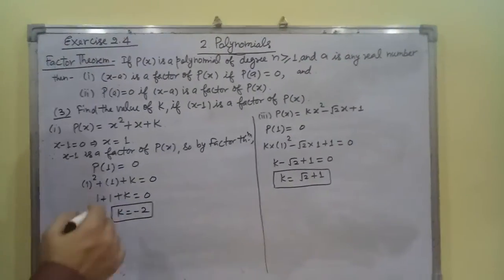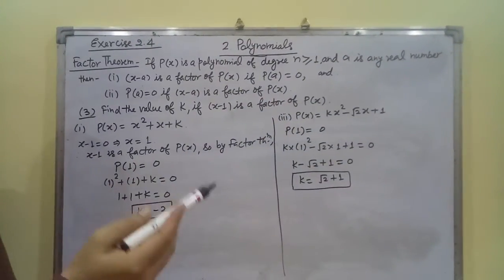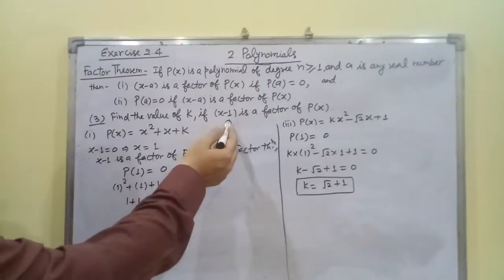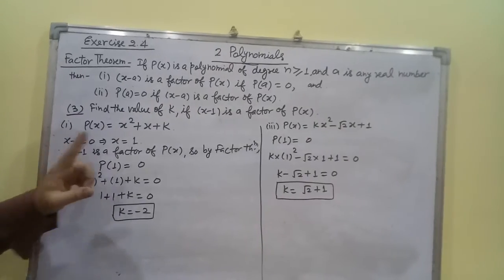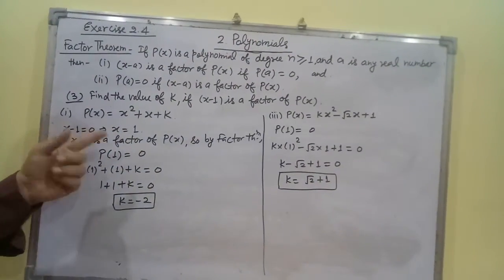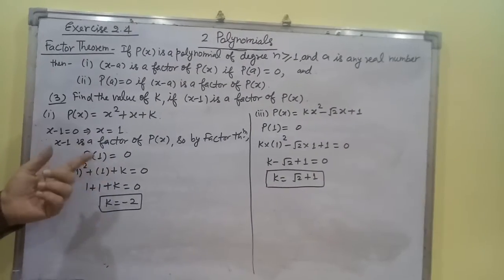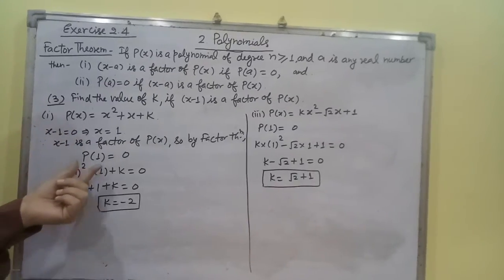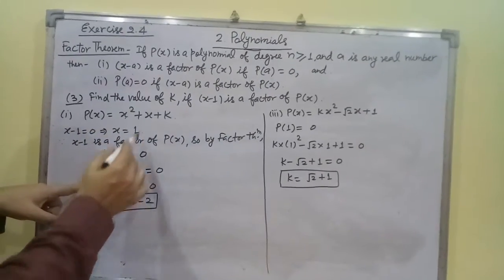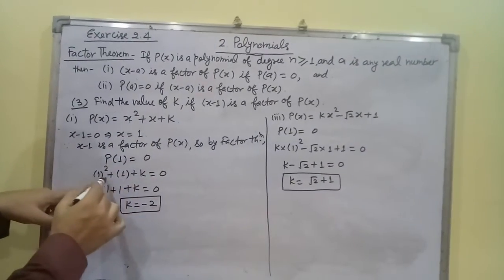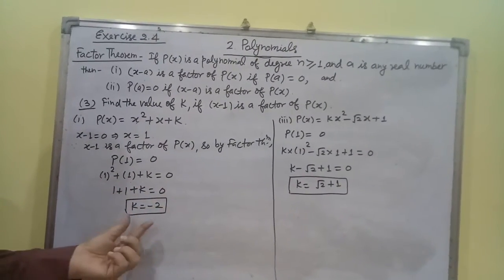The third question asks us to use the Factor Theorem to find the value of k, given that x minus 1 is a factor of P(x). Here P(x) = x² + x + k. Since x minus 1 is a factor, by the Factor Theorem P(1) = 0. Substituting: 1² + 1 + k = 0, so 2 + k = 0, giving k equal to minus 2.